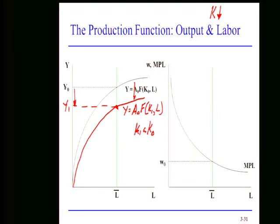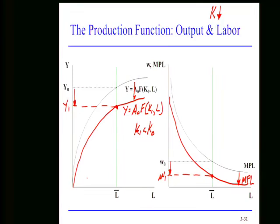We would show this diagrammatically as a downward rotation of the production function. Because we've rotated the production function down, the slope has flattened, so the marginal product of labor has declined, and as a result, the equilibrium real wage will decline. Less capital is actually adverse for workers — workers become less productive on the margin, and their real wage declines. This is not something that happened in the labor market; workers simply get adversely impacted by what happened to the capital stock.